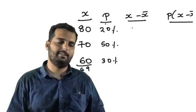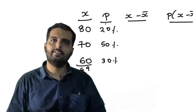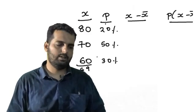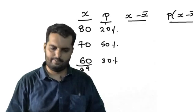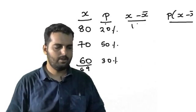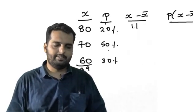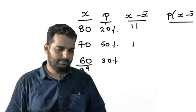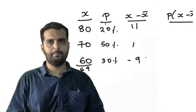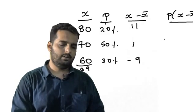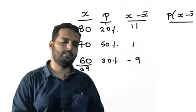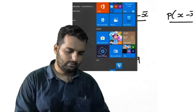So, what do we do next is, we take the X minus X bar. 80 minus 69 will turn out to be, let us say, 11. Then, 70 minus 65 would be 1, 60 minus 69 would be minus 9. Now we have to take the, P into X minus X bar, the whole square. Let us take the calculator for that.